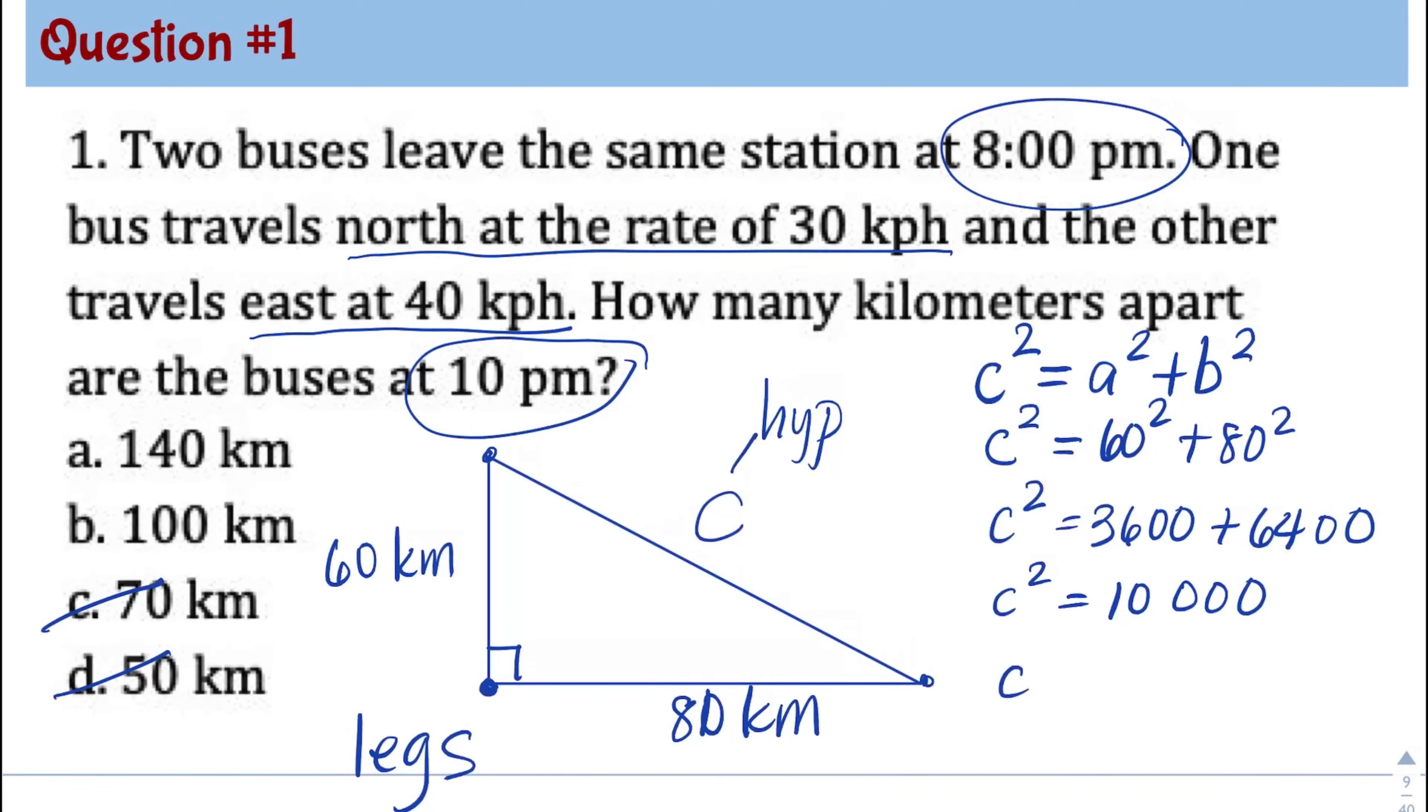To solve for the C, don't forget to get the square root of both sides. And we have here four zeros. So when you get the square root of one, that's one, you have four zeros, you get half the number of zeros. So that means it will be 100. Because 100 times 100 will give you 10,000. So the answer is letter B, 100 kilometers.